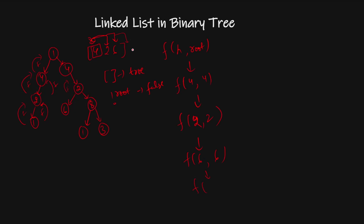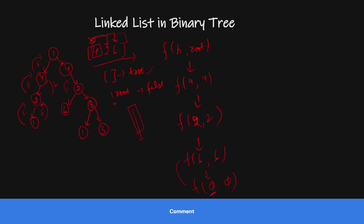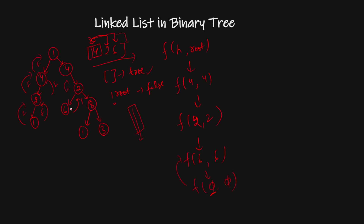After matching 6, the next element in the linked list is null. A null head means we have traversed the entire list and found all nodes in a continuous downward manner, so we return true. This true propagates all the way back up the call stack. Finally, it returns true, meaning the linked list is present in the binary tree.